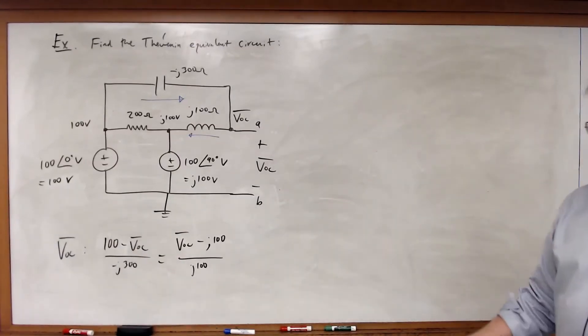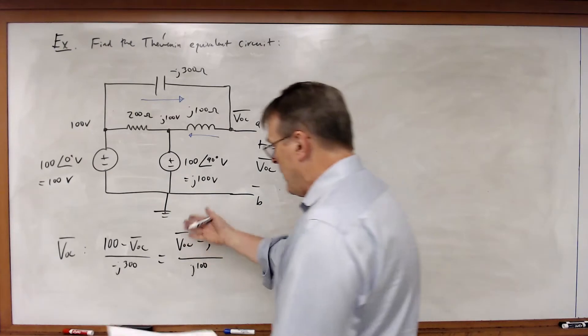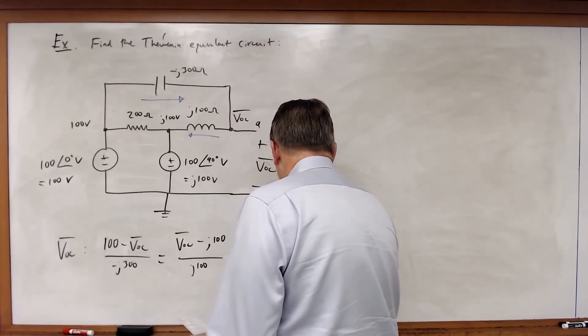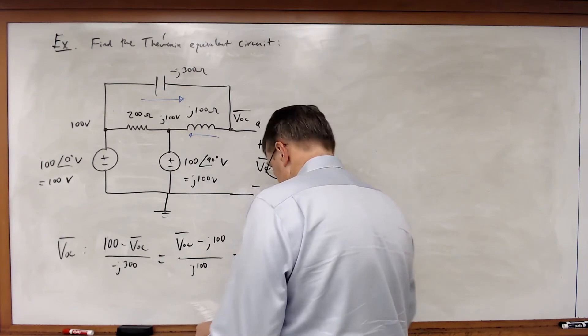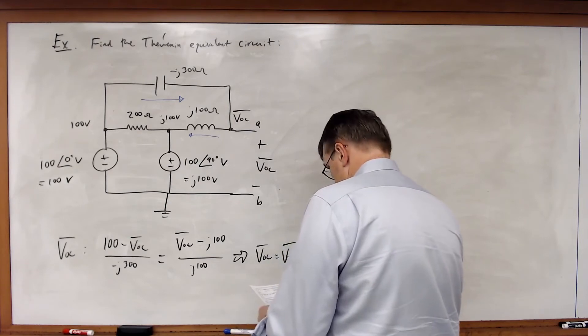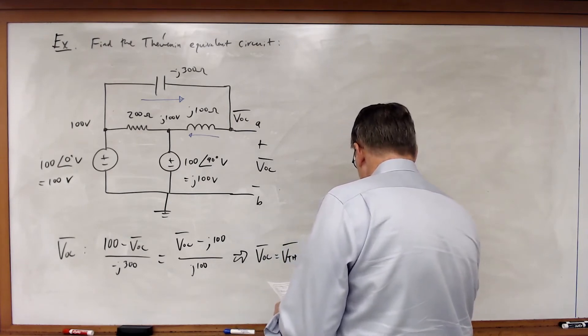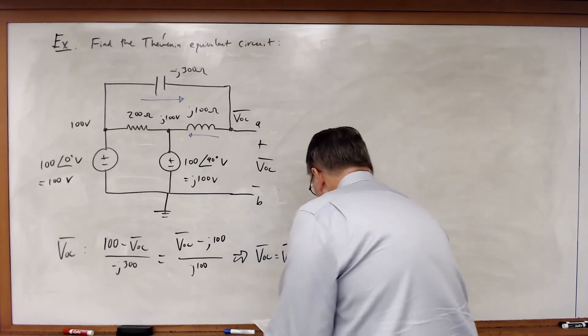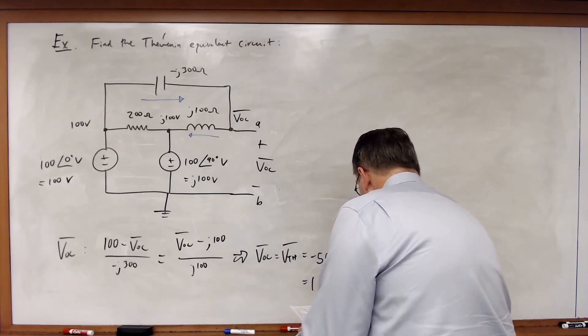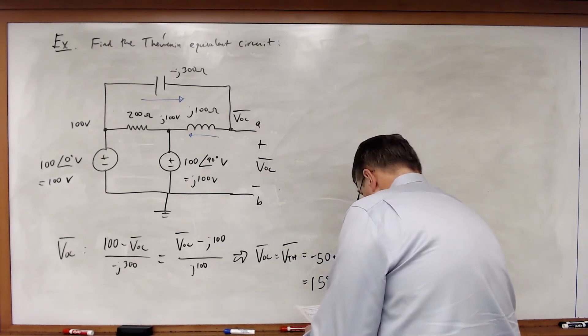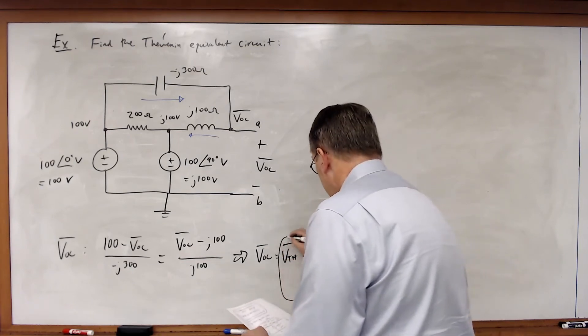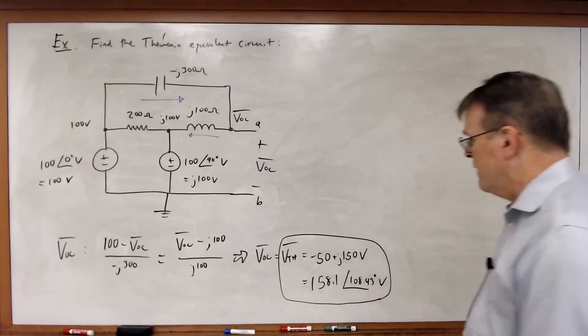Now I solve this one equation with one unknown. I get VOC, which equals VTH, equal to -50 + j150 volts, which is 158.1∠108.43° volts. So there's your Thevenin equivalent voltage.